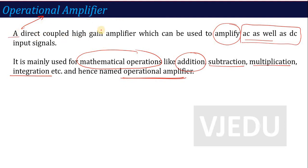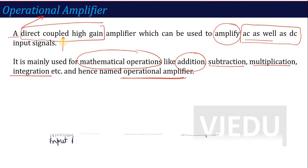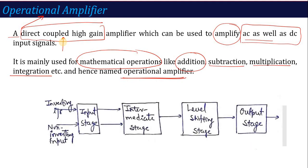The definition I have written here is: a Direct Coupled High Gain amplifier which can be used to amplify AC as well as DC, and is mainly used for mathematical operations like addition, subtraction, multiplication, integration, etc. — hence the name Operational Amplifier. Direct Coupled High Gain means you understand its block diagram. The block diagram of an Operational Amplifier has 4 stages: input stage, intermediate stage, level shifting stage, and output stage.